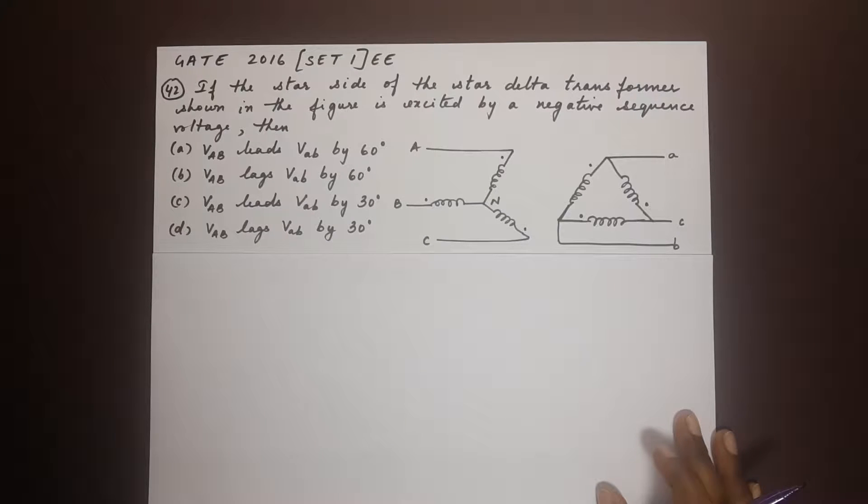VAB leads vab by 60 degrees. VAB lags vab by 60 degrees. VAB leads vab by 30 and VAB lags vab by 30.